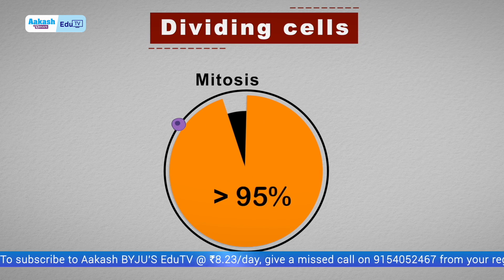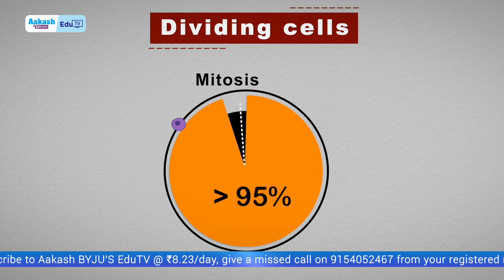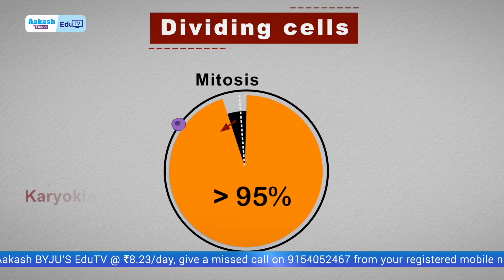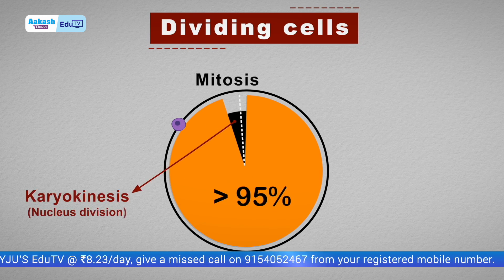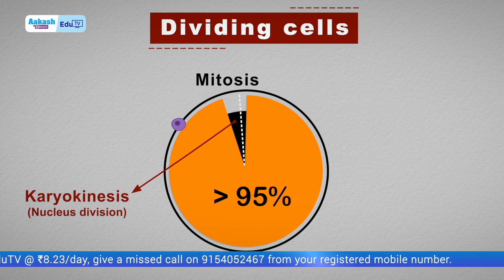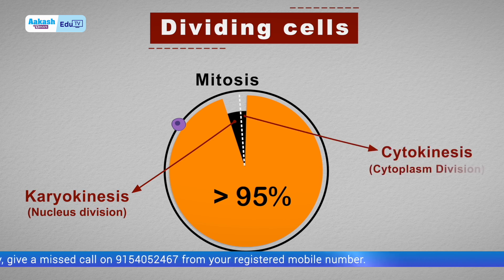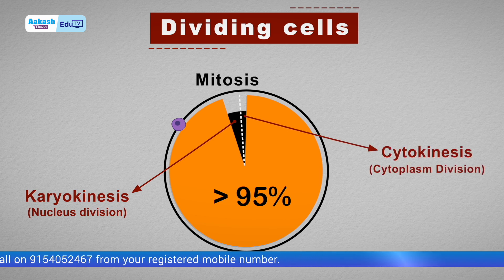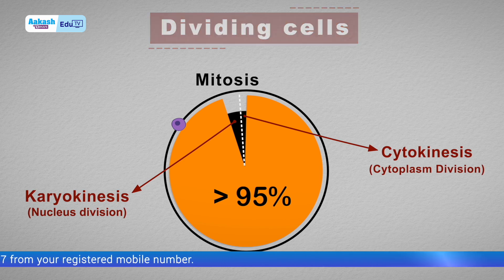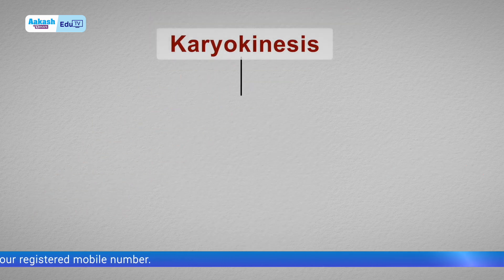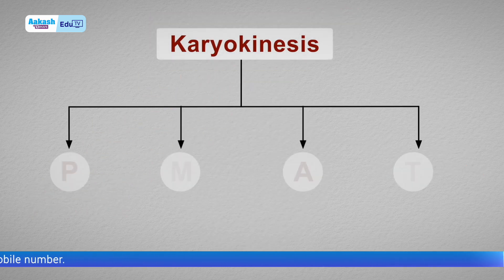After G2 phase, mitosis occurs, which involves two processes: karyokinesis, where the nucleus divides, and cytokinesis, where the cytoplasm division takes place. Karyokinesis is further divided into four stages.